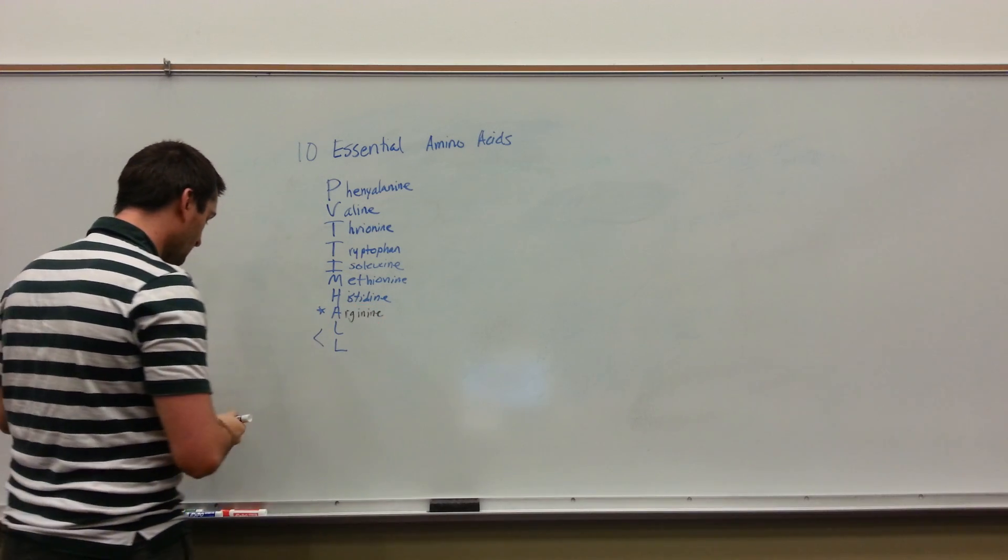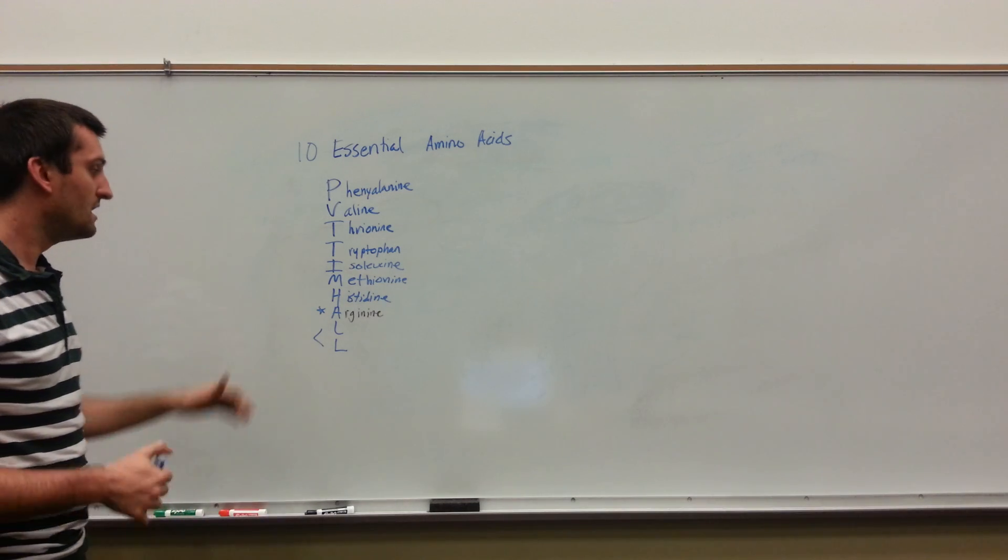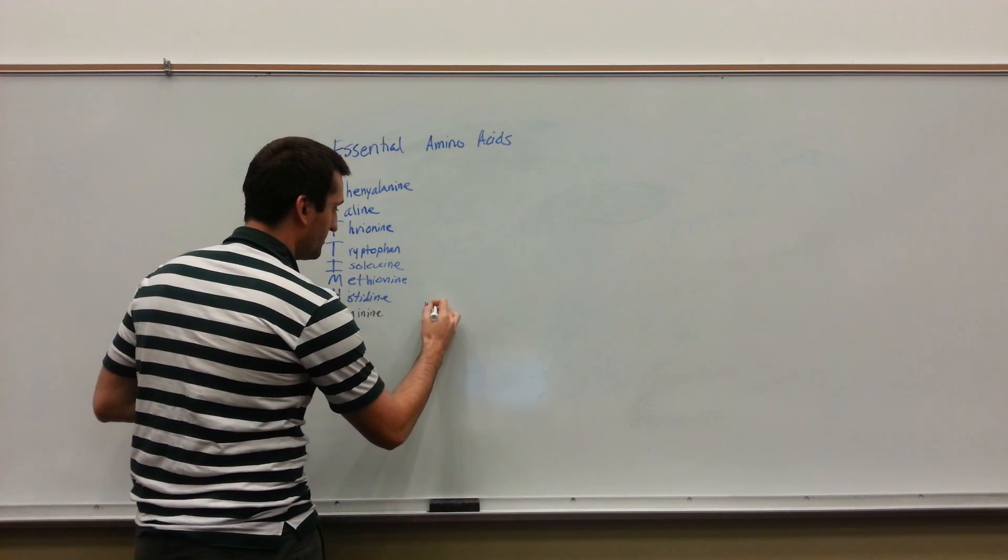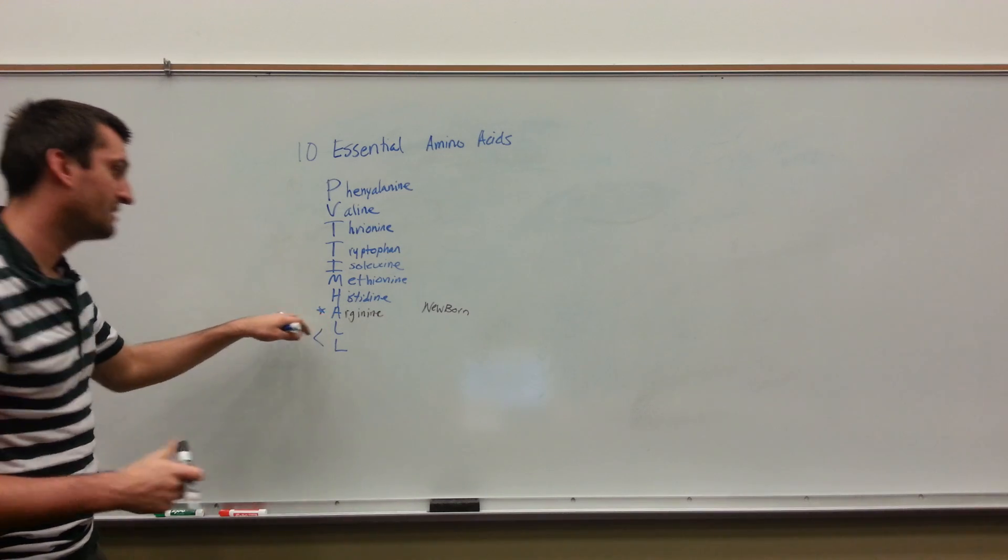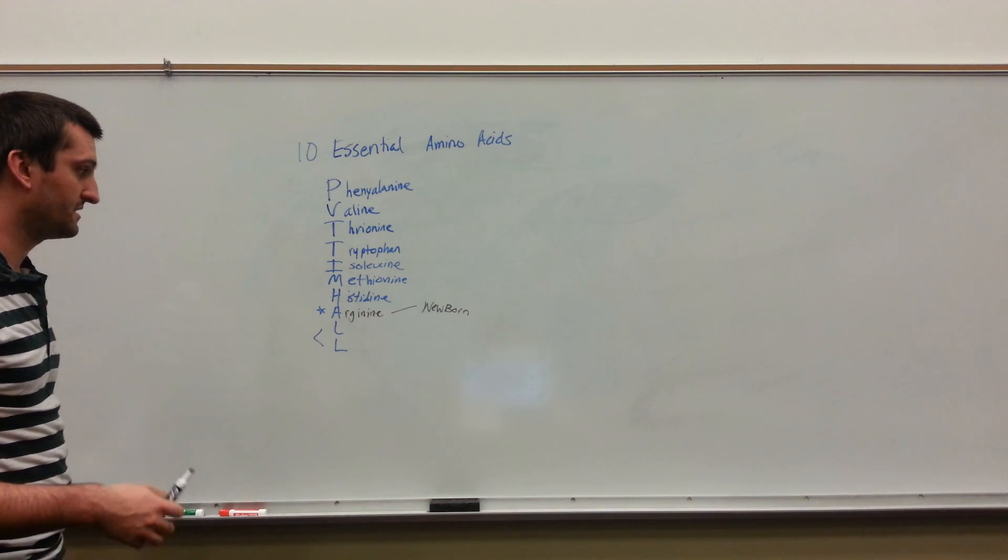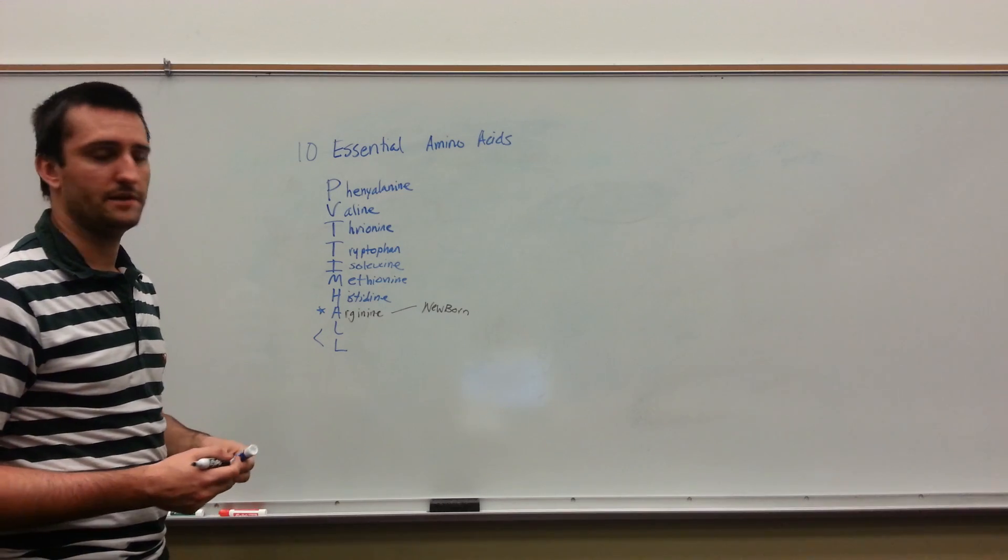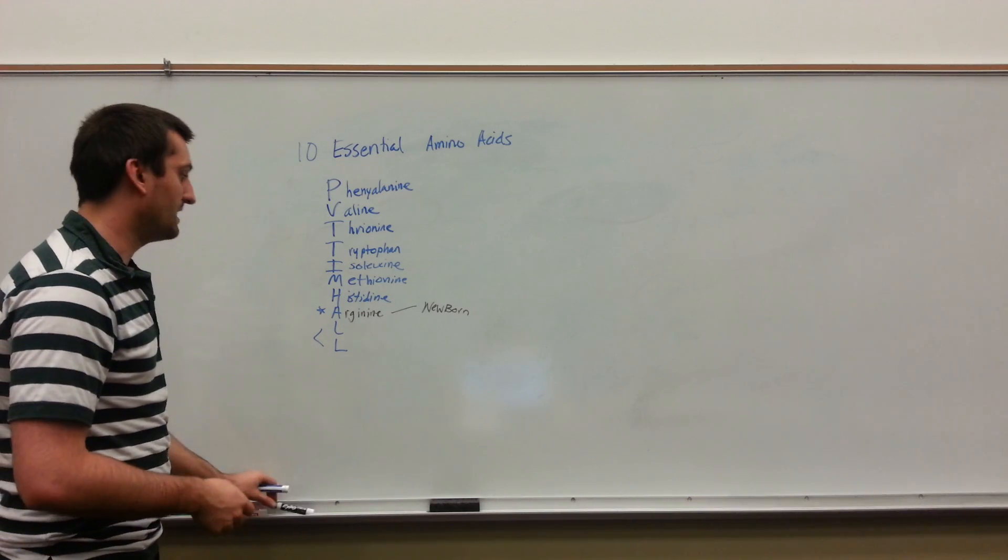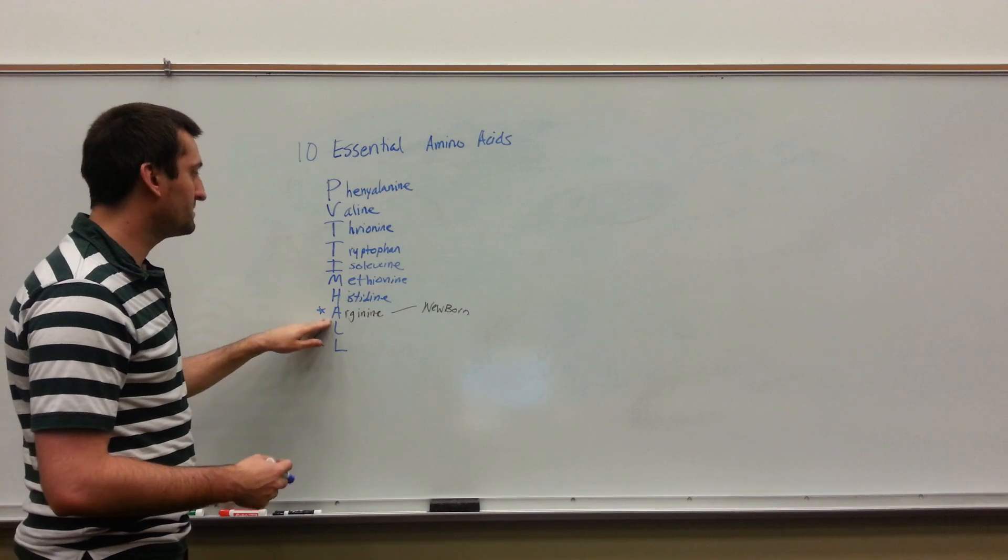So why am I writing this in a different color? It's because it's essential in some people but not in others. When is it essential? In a newborn. A newborn is not going to be able to synthesize arginine, so they need to get it in their diet. However, a typical adult will be able to synthesize arginine, so it becomes a non-essential amino acid. Also, you may see this in trauma victims, burn patients, etc. But for essential amino acid's sake, it can be an essential amino acid.